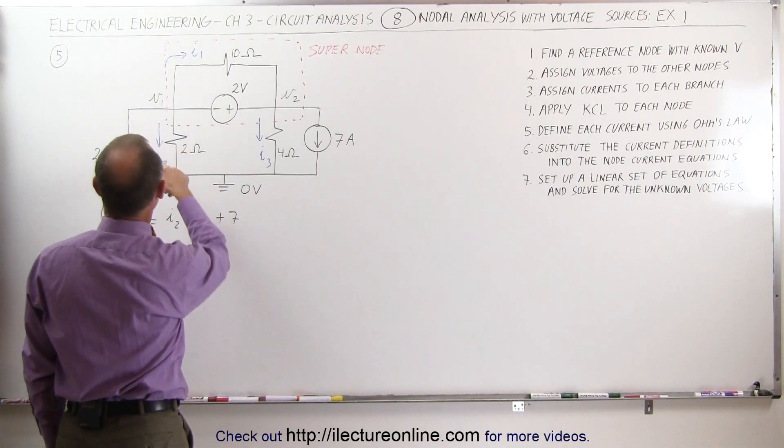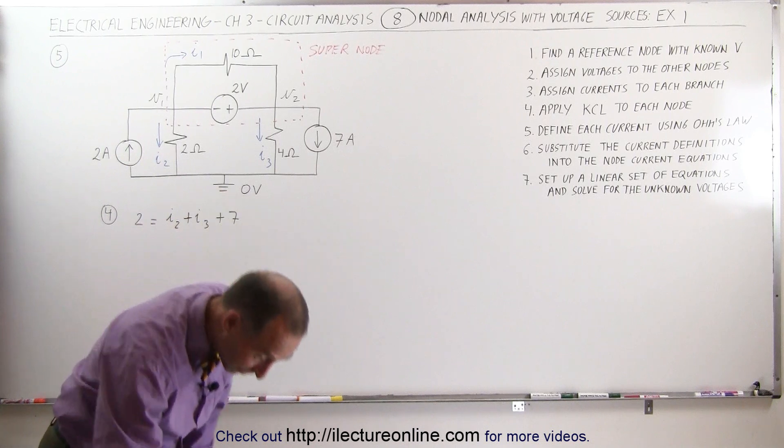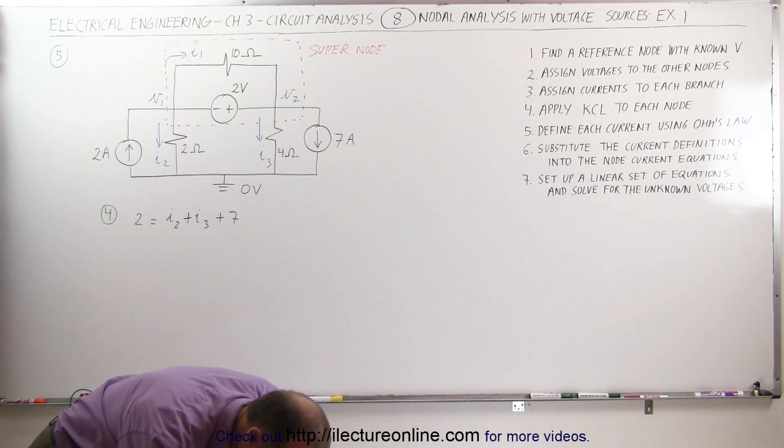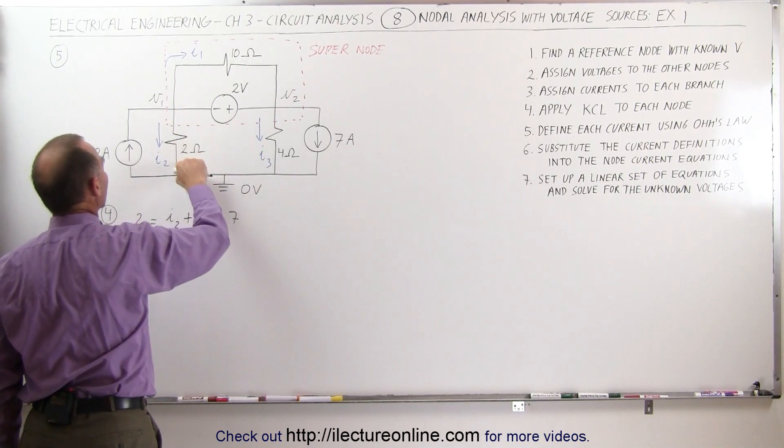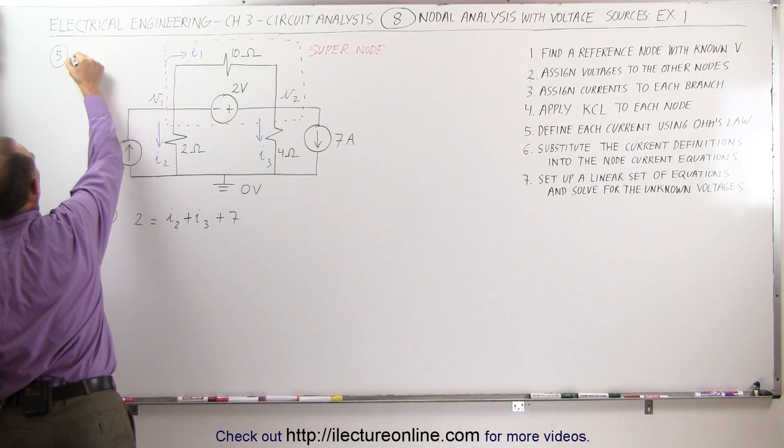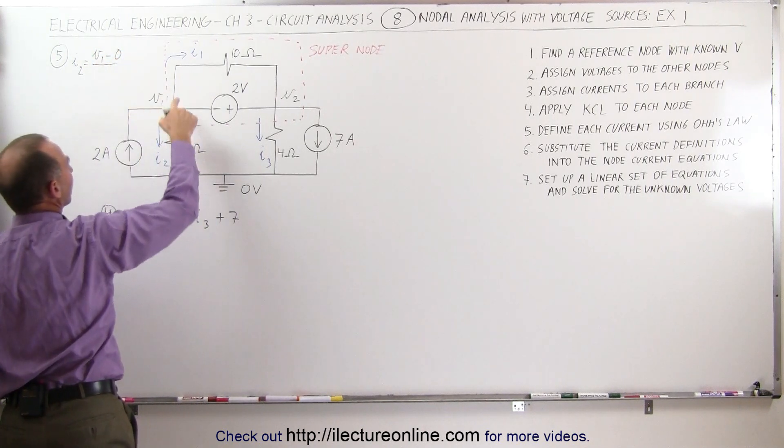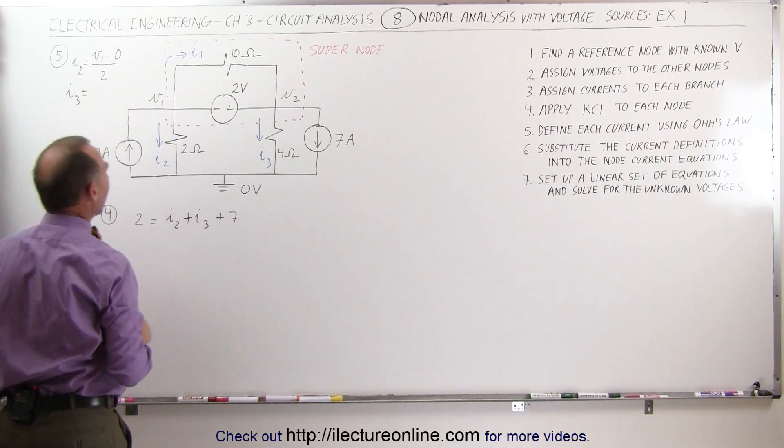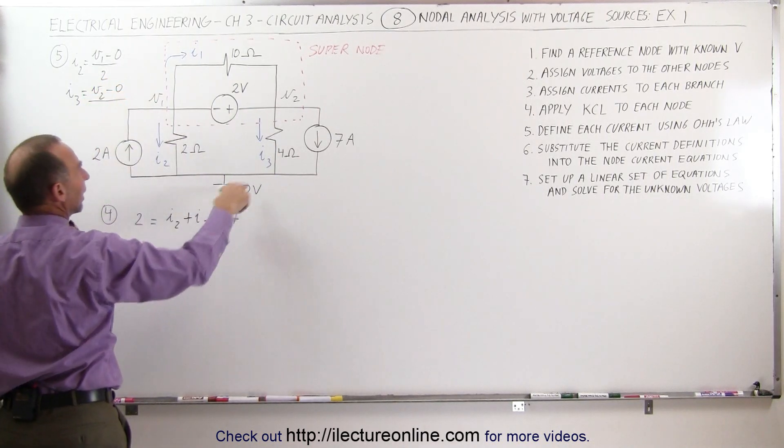Let's define the currents in terms of their voltages, the voltages in the circuit right here. Step 5, we're going to define I2. I2 can be defined as the voltage drop here divided by the resistance. That means the voltage where we came from, so I2 is equal to V1 minus 0 divided by the resistance, which is 2. I3 can be defined as the voltage drop, which is V2 minus 0 divided by the resistance, which is 4.